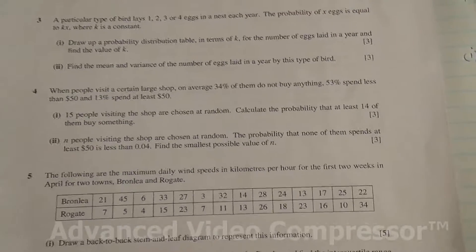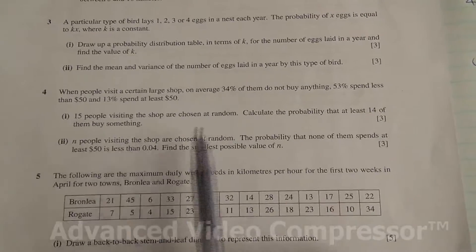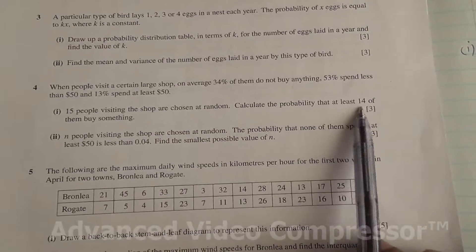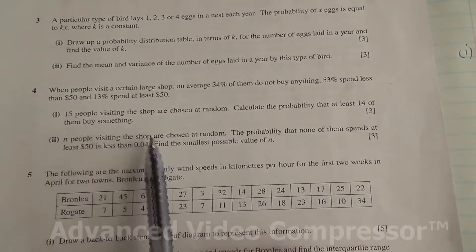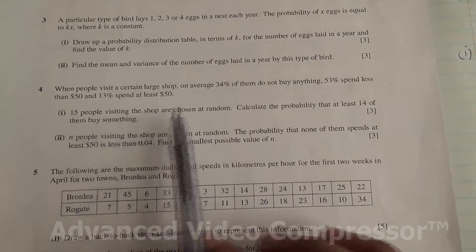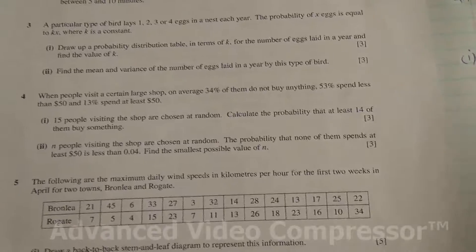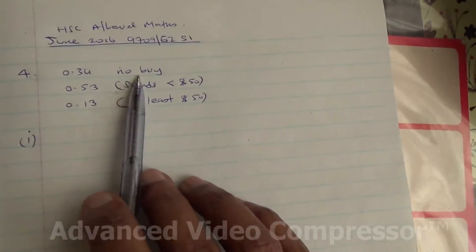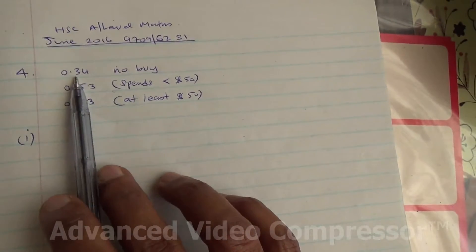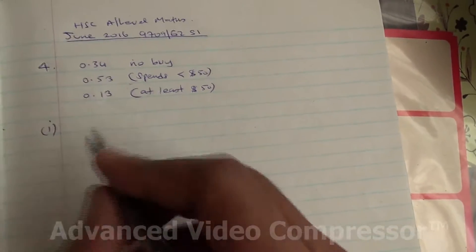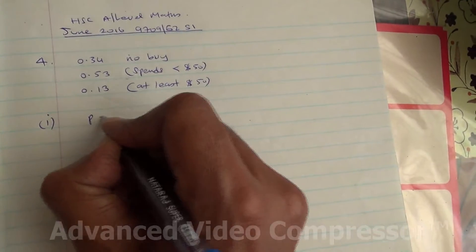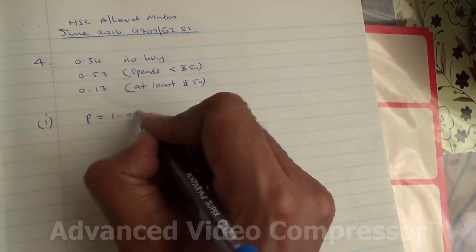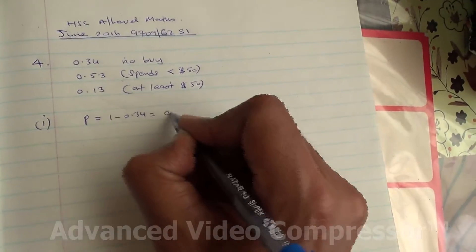Now 15 people are visiting the shop, and we need to find the probability that at least 14 of them buy something. So if they are buying something, here we have the probability that they are not buying anything. So the probability of buying something will be 1 minus 0.34. Probability of buying, that is our probability of success, will be 1 minus 0.34, that means 0.66.